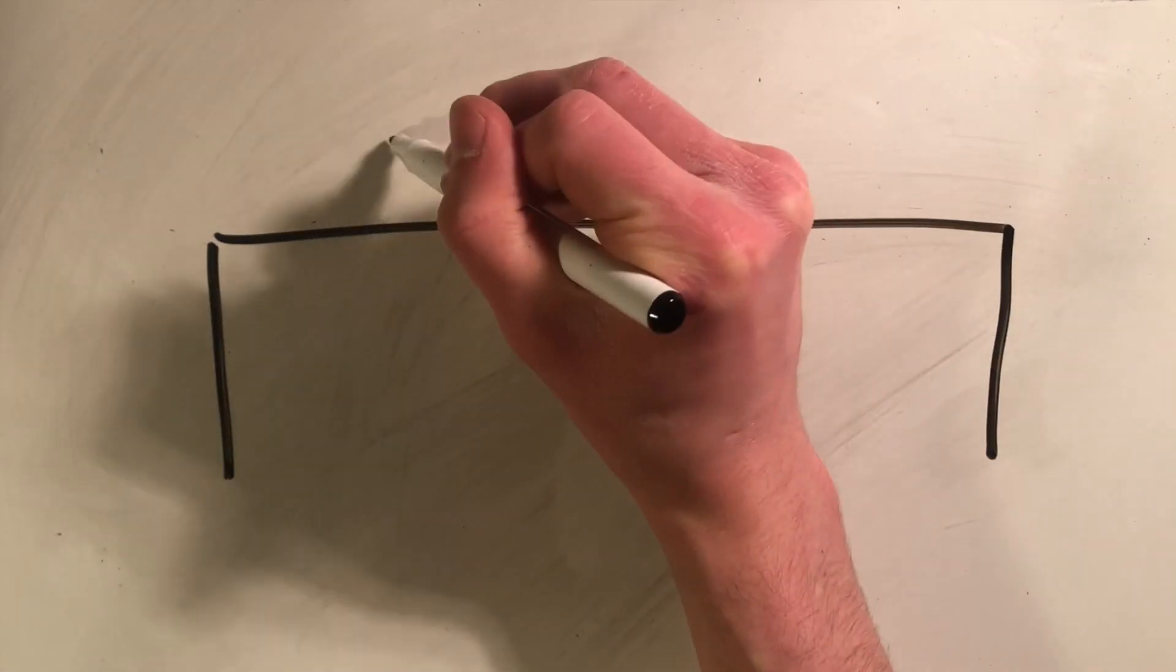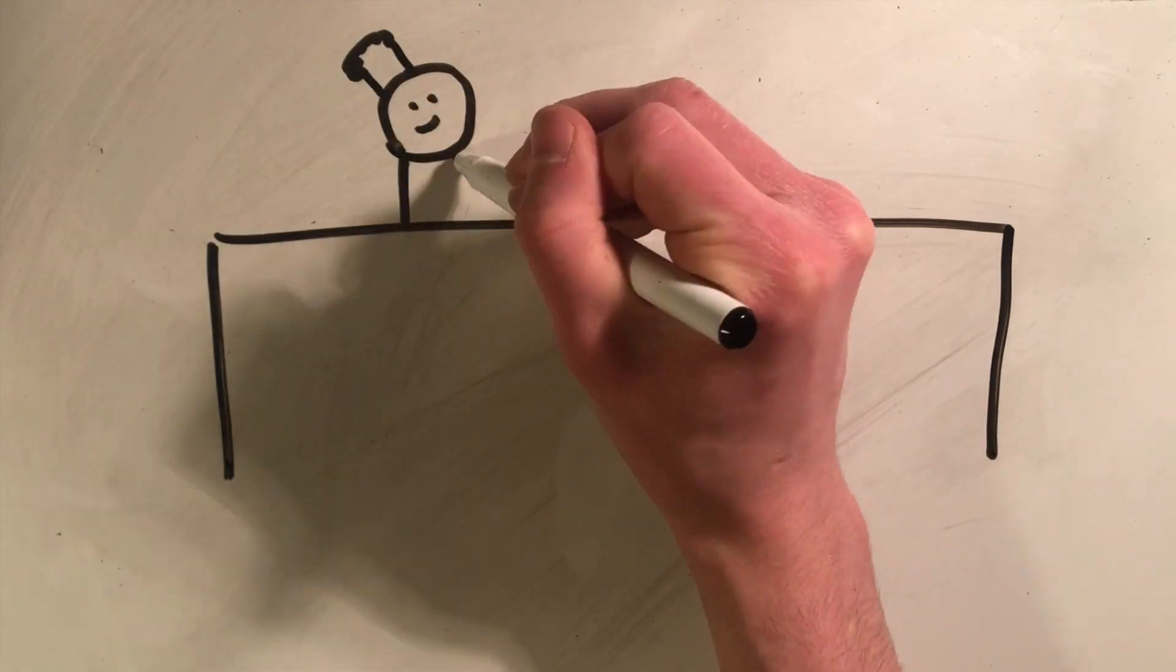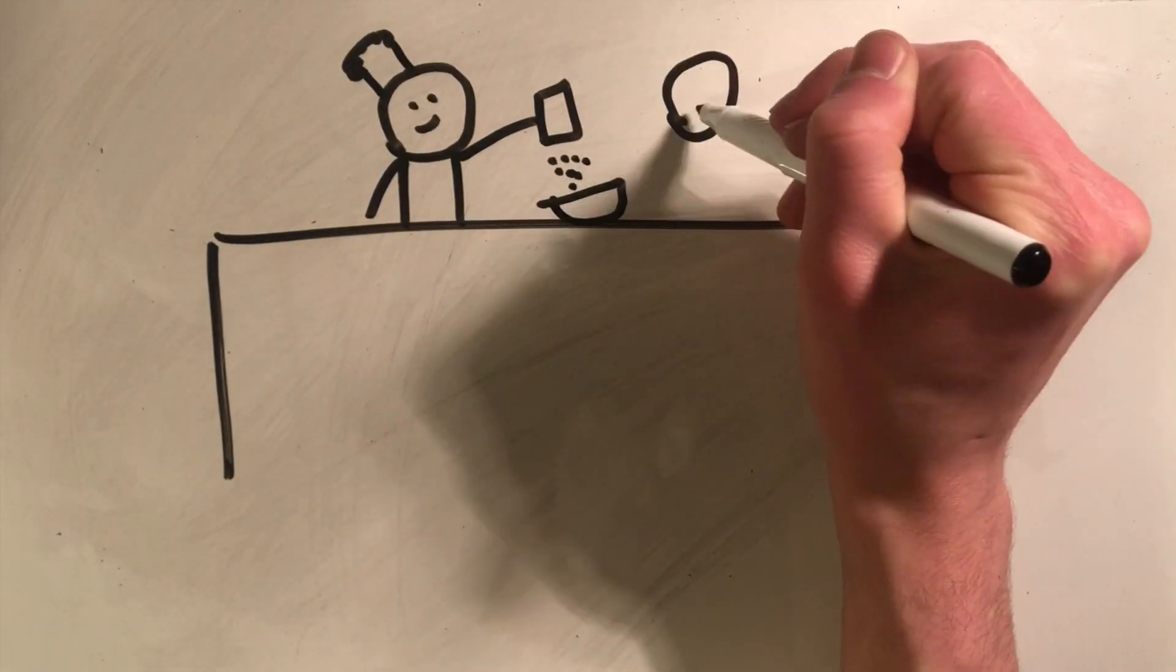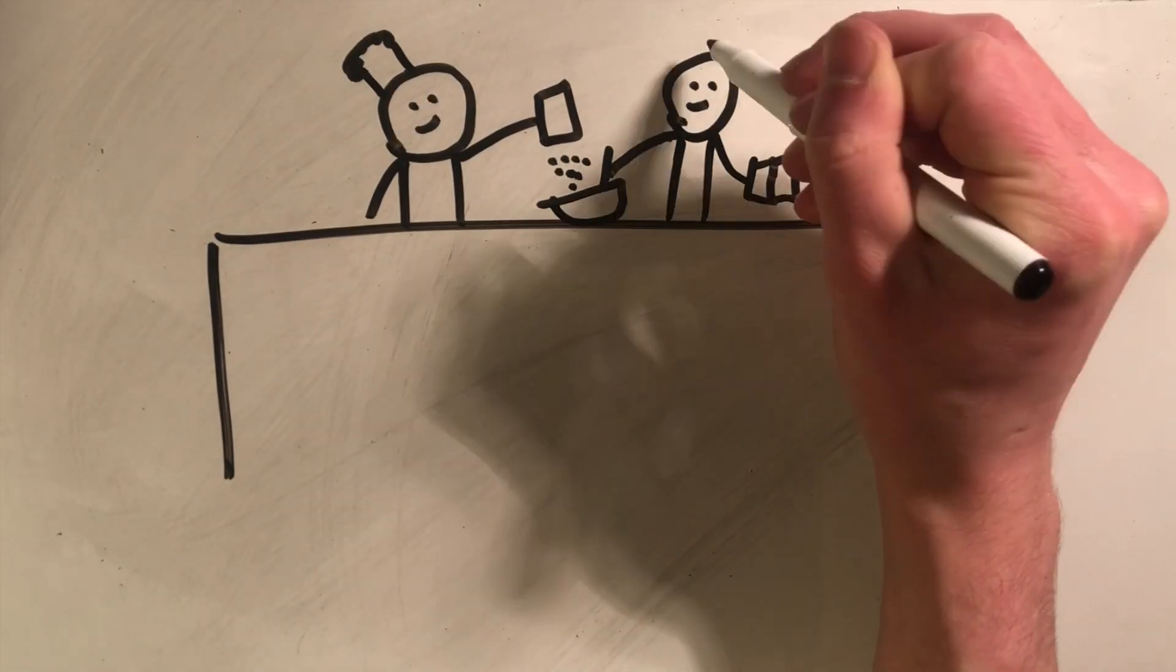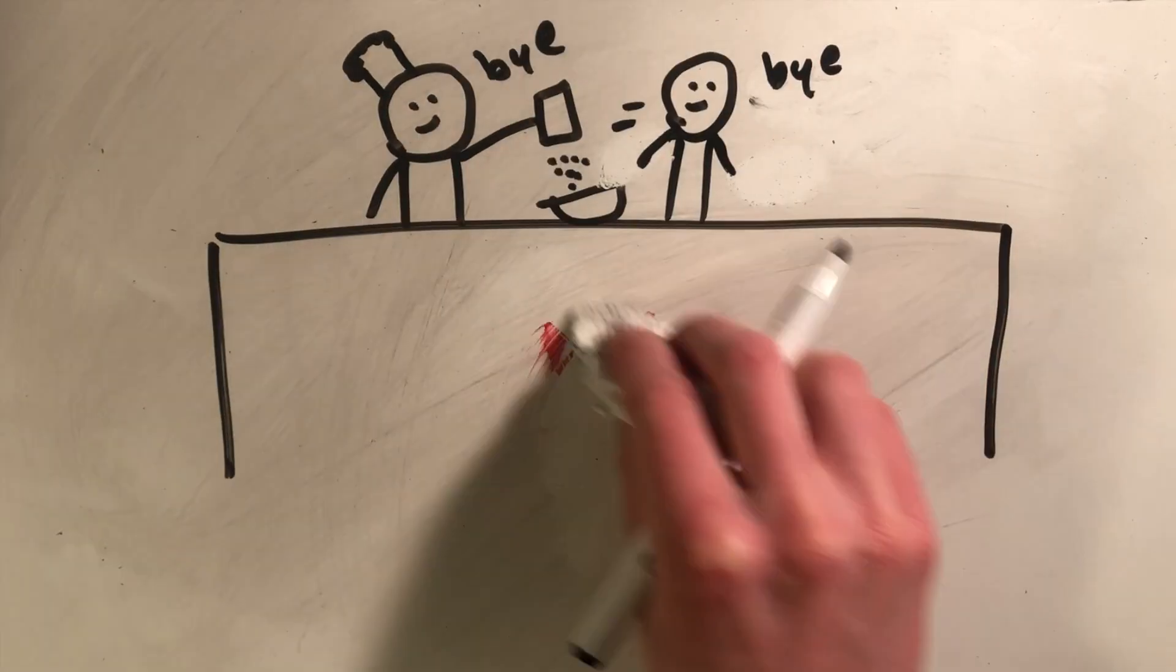If you're baking a cake with someone, and they decide they want to stop during the measuring, the mixing, the baking, or at any point in the cake making process, do not keep making the cake. Sure, it's frustrating, but sometimes people change their minds. Just let your baking partner leave the kitchen.